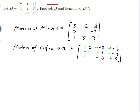So my matrix of cofactors is: row 1: +5, −(−2), +(−3); row 2: −2, +1, −(−3); row 3: +1, −5, +3. Applying the sign pattern to each entry of the matrix of minors gives the complete cofactor matrix.